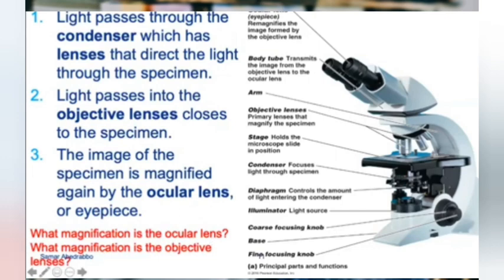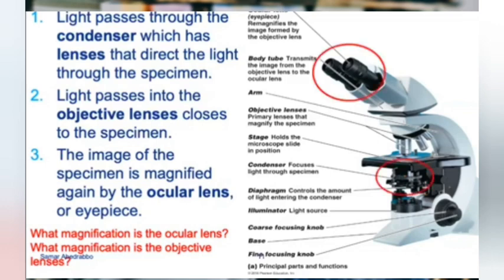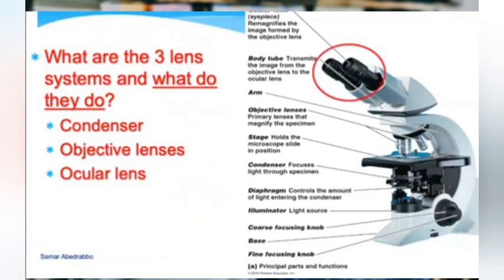The ocular lens has a default magnification of 10x. If you want more magnification you use the objective lenses. There are four objective lenses on your light microscope: 4x, 10x, 40x, and 100x. Their function is to give you higher magnification.